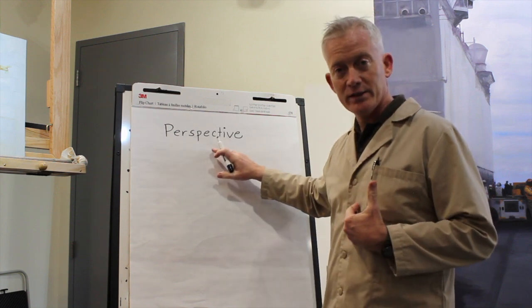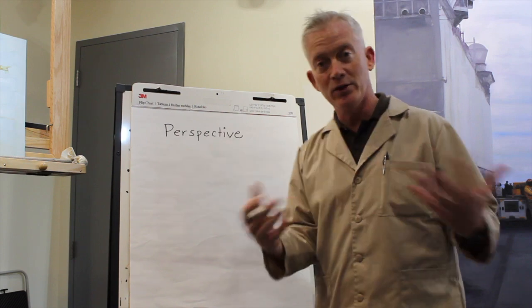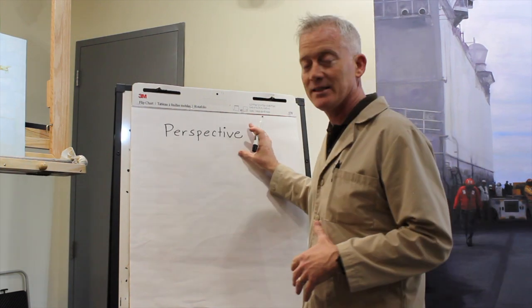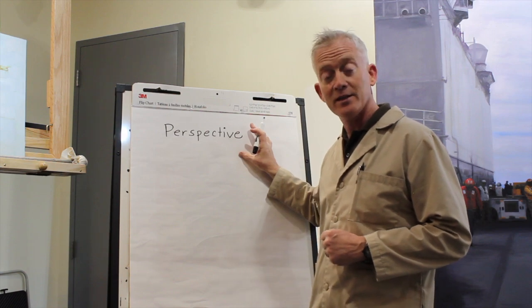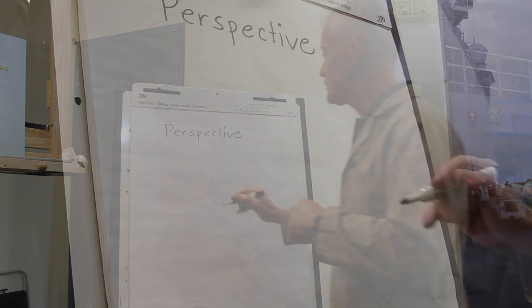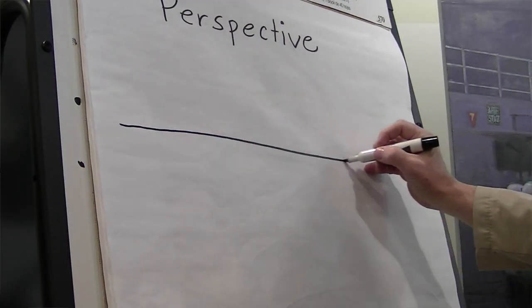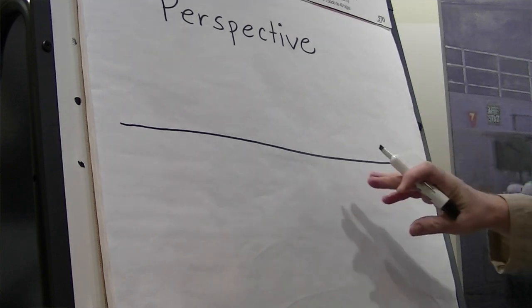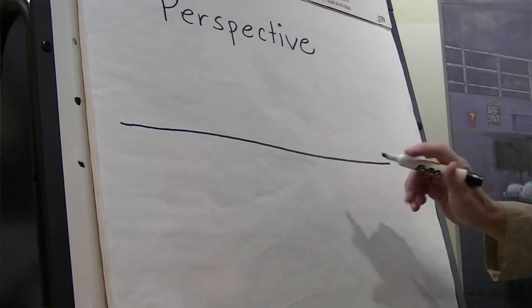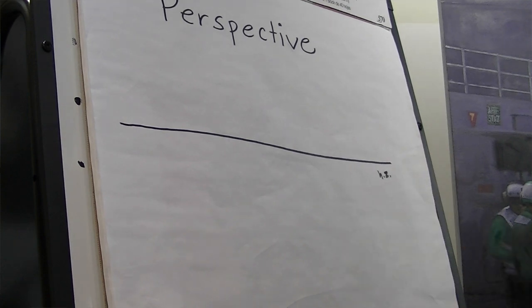So perspective, of course, in common parlance and some manners of speaking means the way you look at something. And in this case, specifically how things appear as you see them and as they go away to the horizon. So one point perspective is what we're going to talk about. And first we start off by drawing a horizon line. And I'll just put HZ for my horizon line. This is as you're looking into the distance, that's as far as you can see.